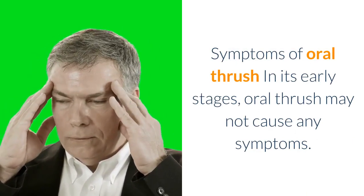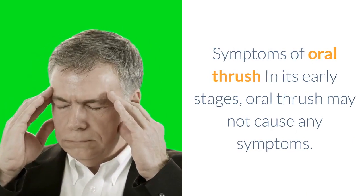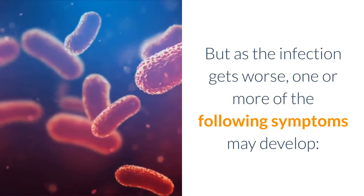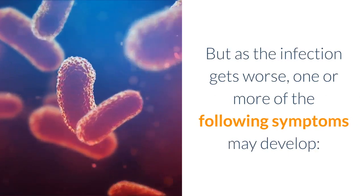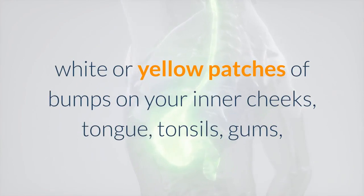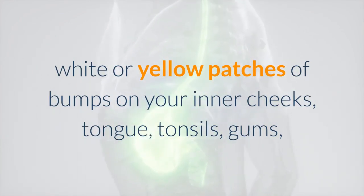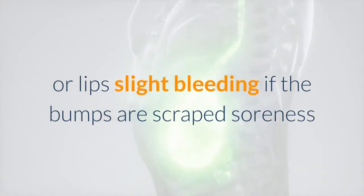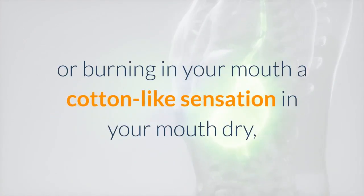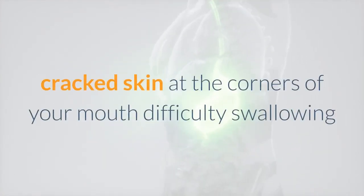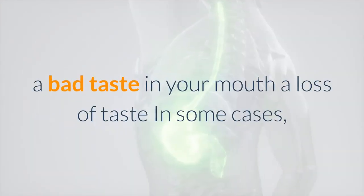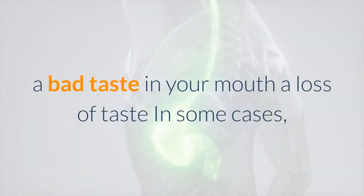In its early stages, oral thrush may not cause any symptoms, but as the infection gets worse, one or more of the following symptoms may develop: white or yellow patches of bumps on your inner cheeks, tongue, tonsils, gums, or lips; slight bleeding if the bumps are scraped; soreness or burning in your mouth; a cotton-like sensation in your mouth; dry cracked skin at the corners of your mouth.